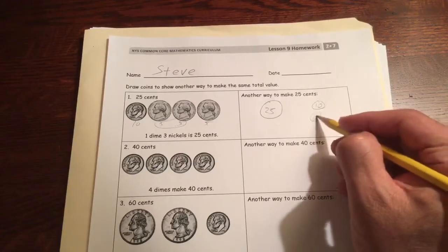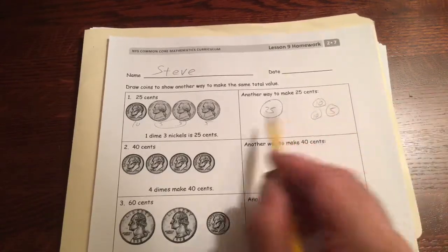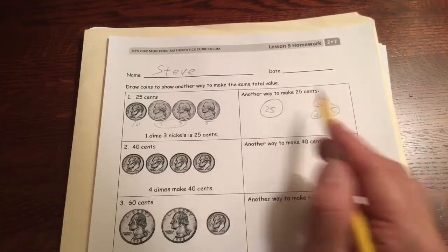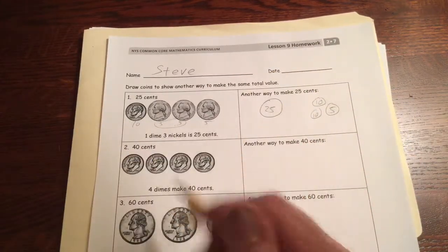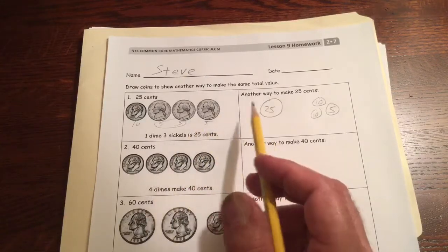It would look like this if you did it that way. But don't do both of these, because that would be 50 cents. Just either that one or that one. And you could do it with pennies, too.